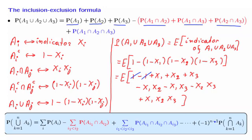The exponent of n minus 1 ensures the last term has the correct sign. For example, if n equals 3, the exponent is 2, giving a plus sign, which is consistent with what we derived. This is a formula that is quite useful when calculating probabilities of unions of events, and the derivation using indicator functions is quite beautiful.